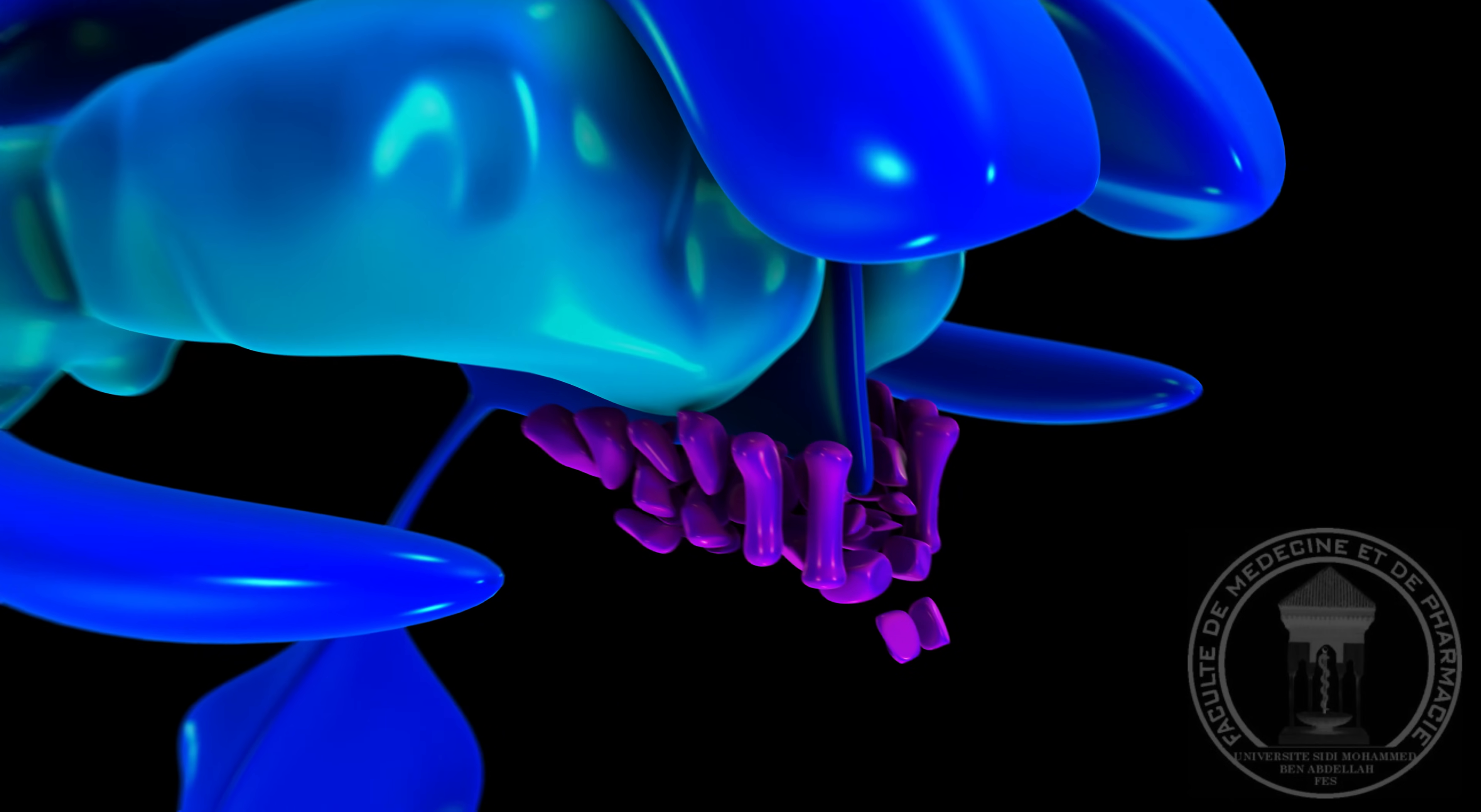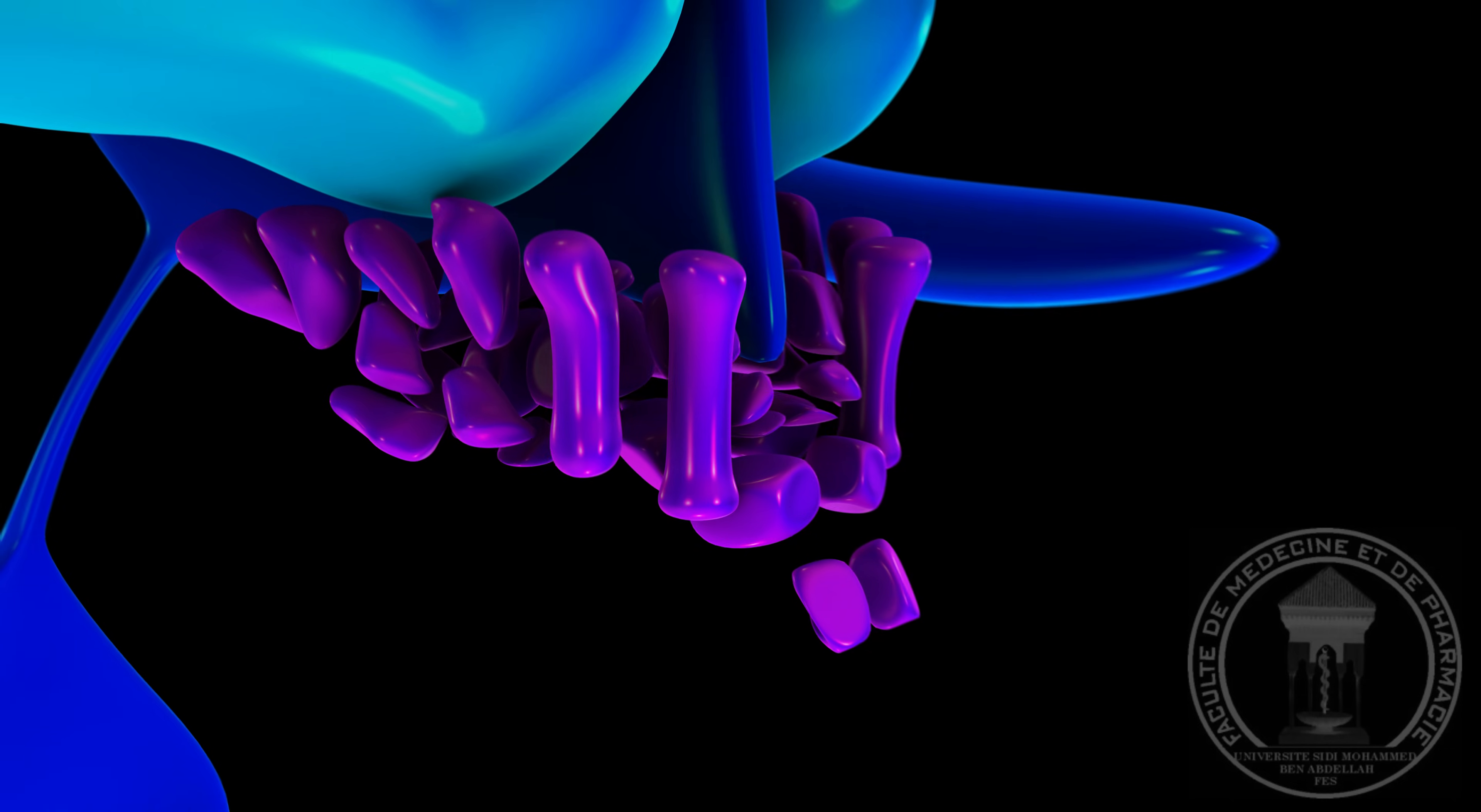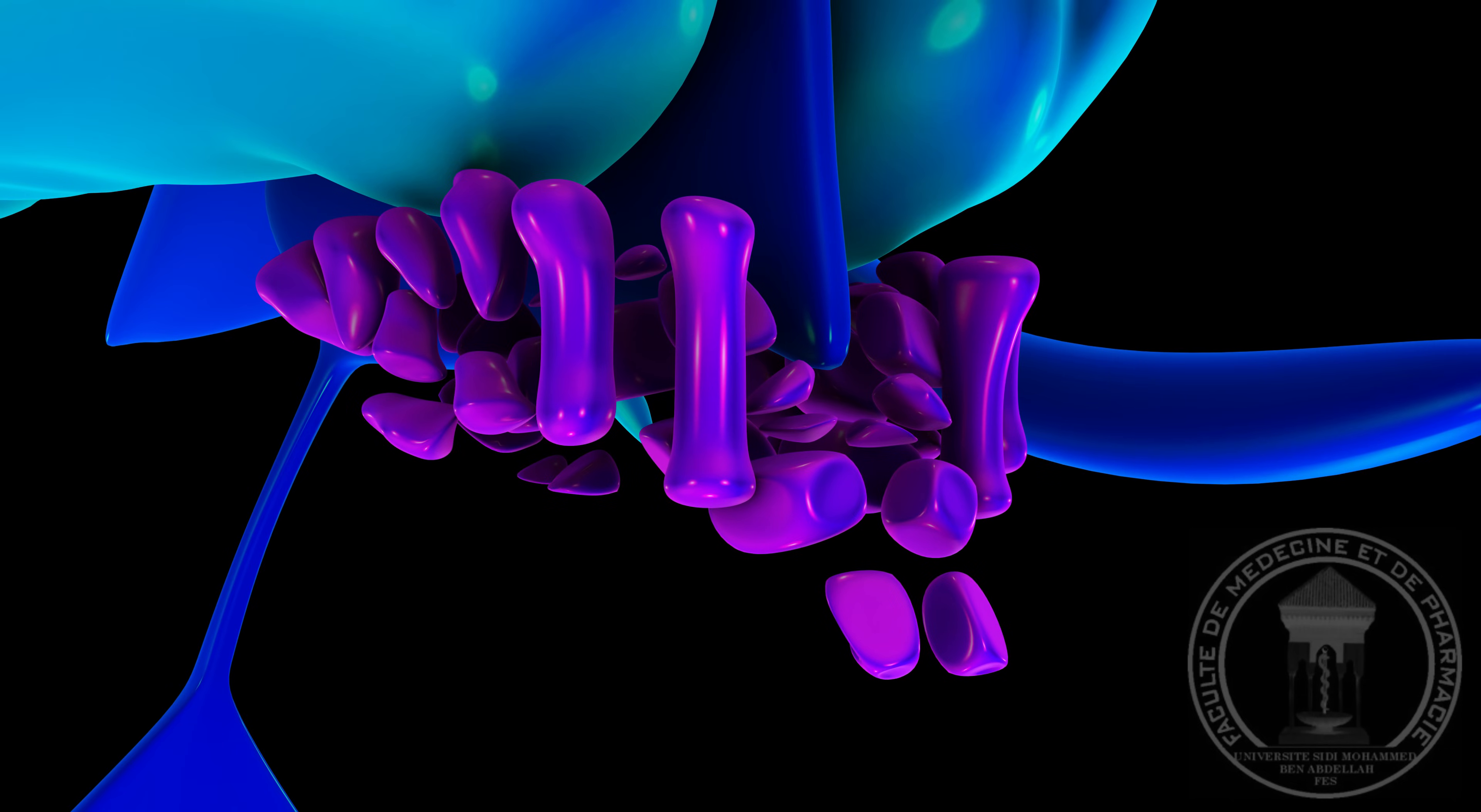The hypothalamus, located directly below and in front of the thalamus, is much smaller in size and volume. Nevertheless, its role in the body is not the least.